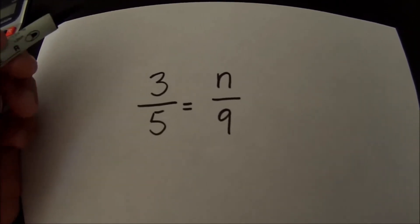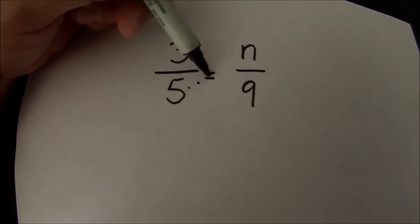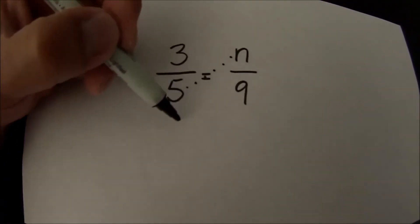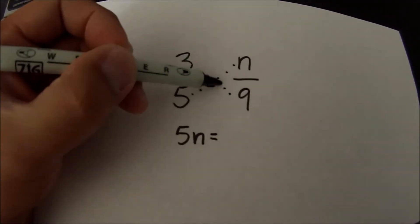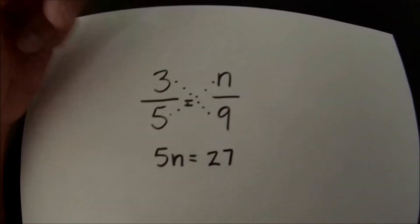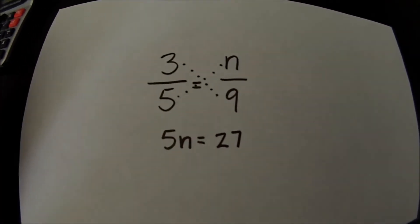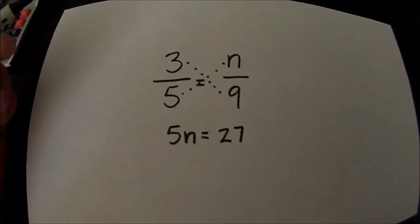So I'm going to go ahead and do what I did in the previous video and basically solve this algebraically where I'll cross multiply and 5 times n is 5n and then 9 times 3 is 27. So again this is the algebraic way to solve this proportion where I cross multiplied and let's go ahead and solve.